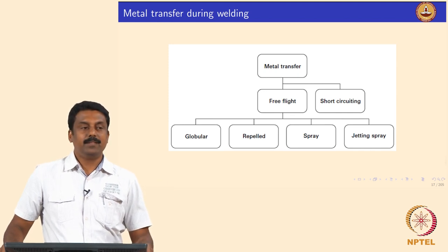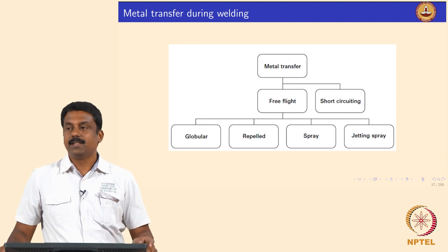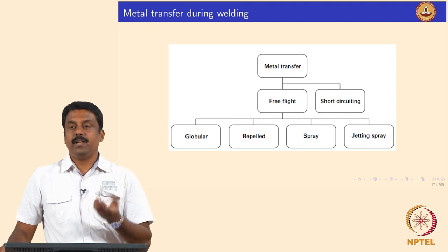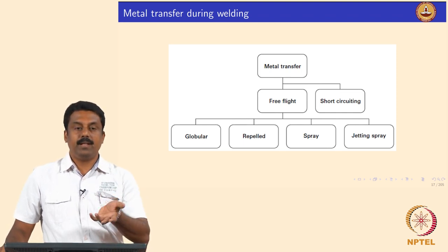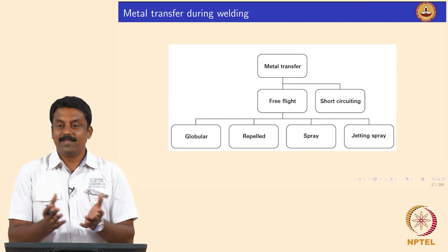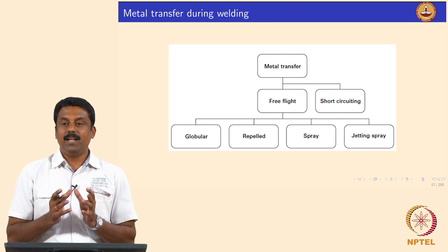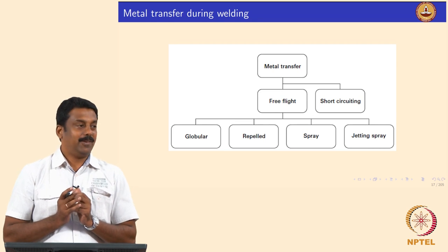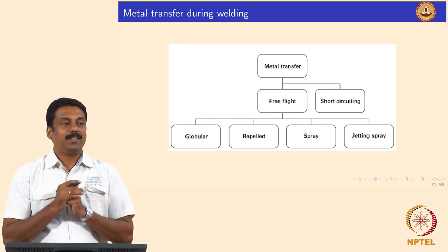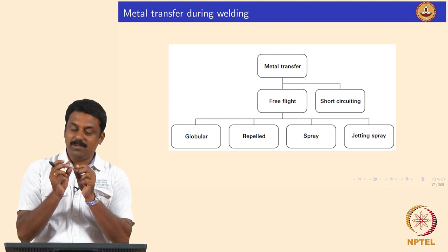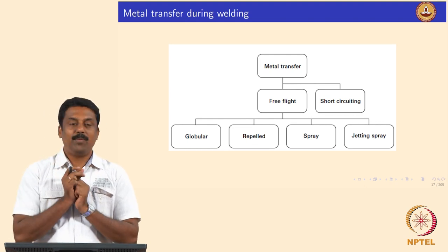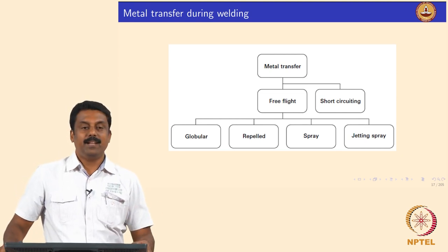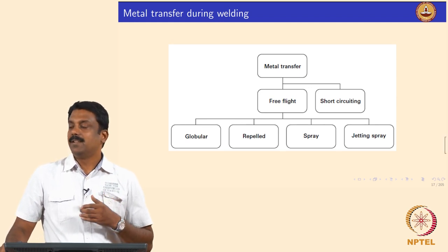For a given current, the melting rate is fixed. If you increase the current, you obviously increase the melting rate, so you are allowed to transfer more. The melting rate increases and you create more volume of liquid metal, which has to be transferred. You transfer it into very small diameter droplets at a much faster rate — it becomes spray. That is why it is called spray transfer when you increase the current.